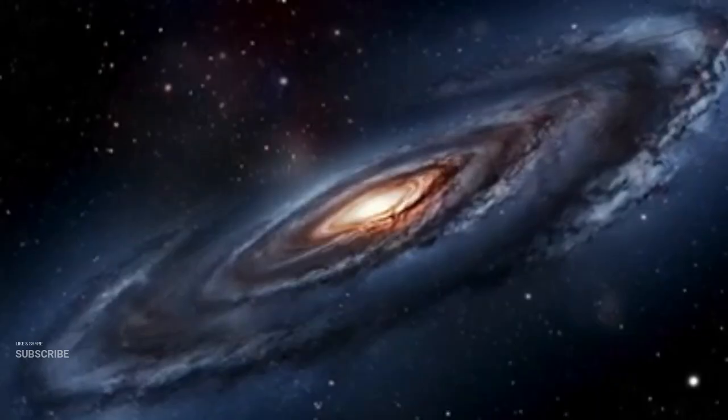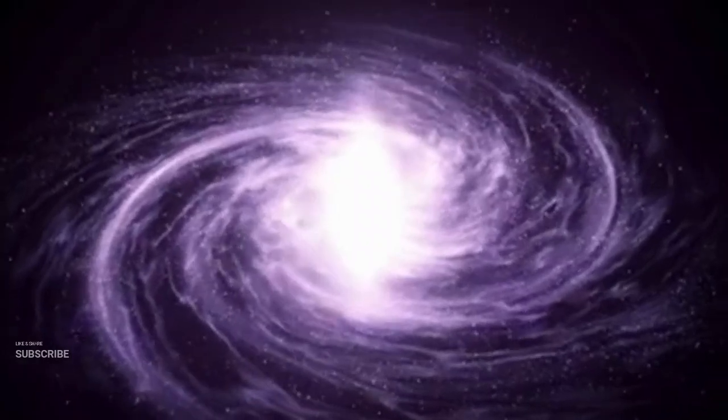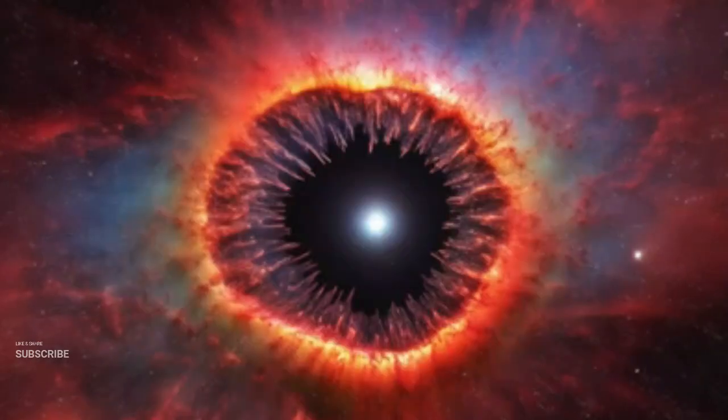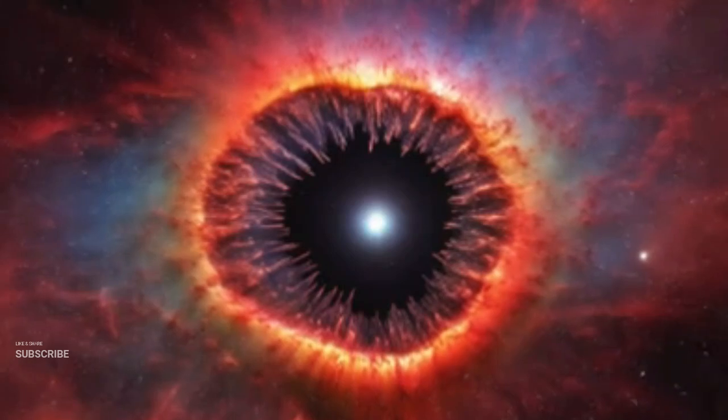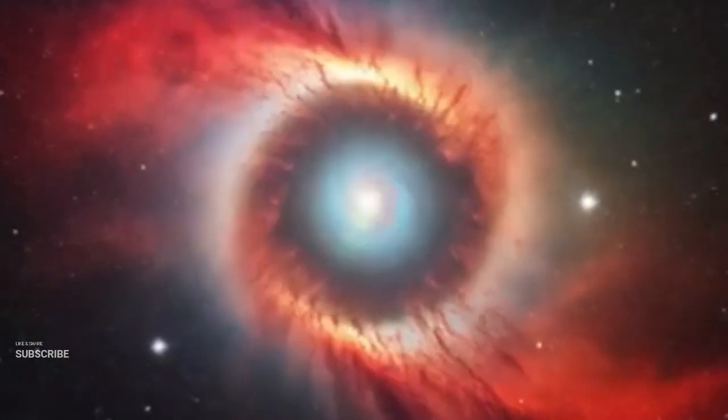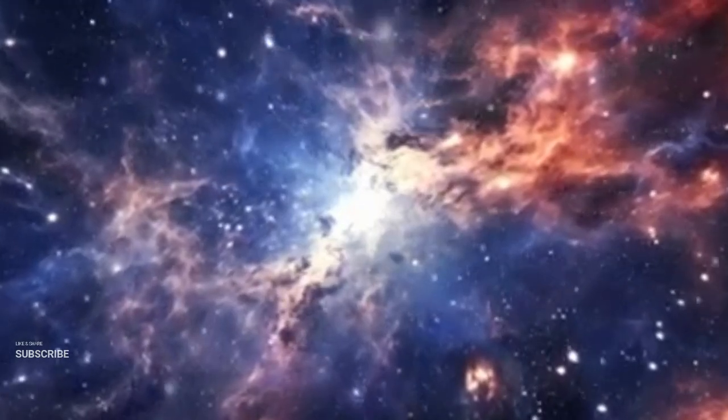As the universe expanded, it started to cool down. After about 380,000 years, atoms began to form, eventually giving rise to galaxies and stars. This process produced radiation which we now refer to as the cosmic microwave background, one of the strongest pieces of evidence supporting the Big Bang theory. The theory also predicts phenomena like nucleosynthesis and the ongoing expansion of the universe.